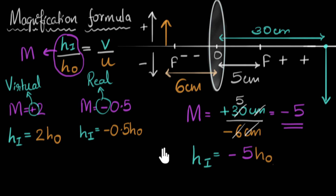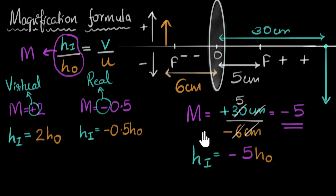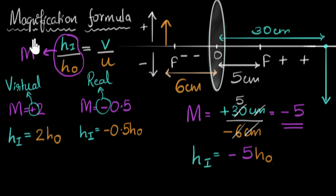To quickly summarize: if we want to figure out the height of the image or its nature — whether it's real or virtual — all we need to do is figure out the magnification. The number tells us how big the image is, and the sign tells us whether it's real or virtual. For lenses, this magnification equals the ratio of the image distance and the object distance.